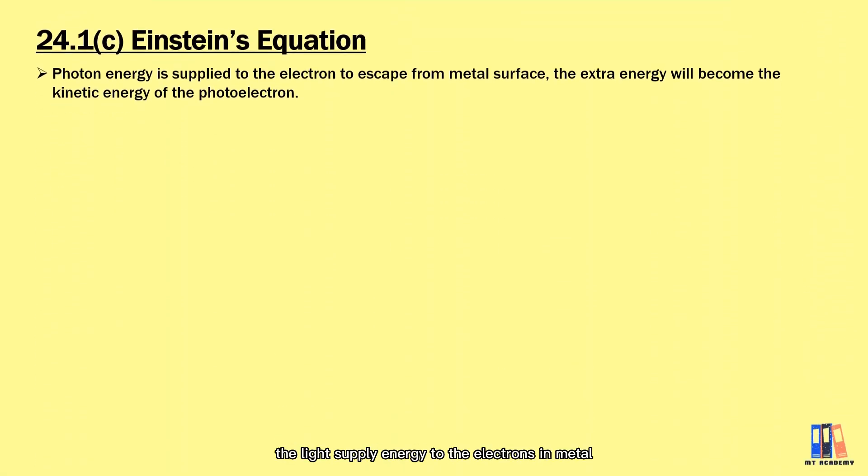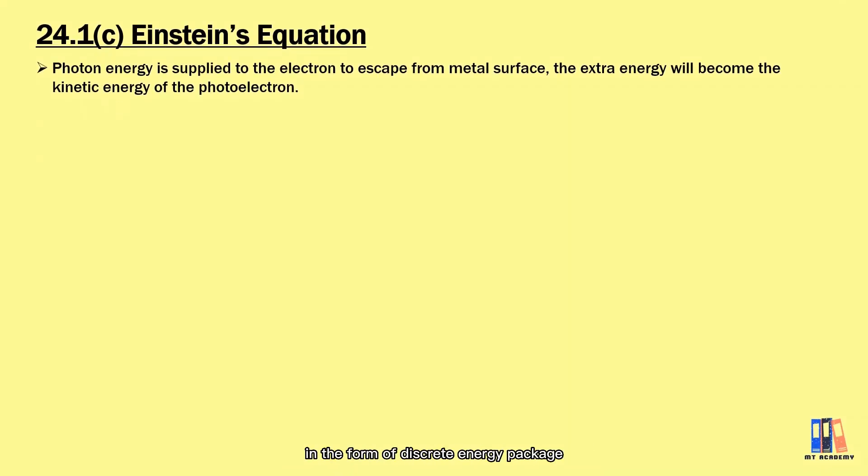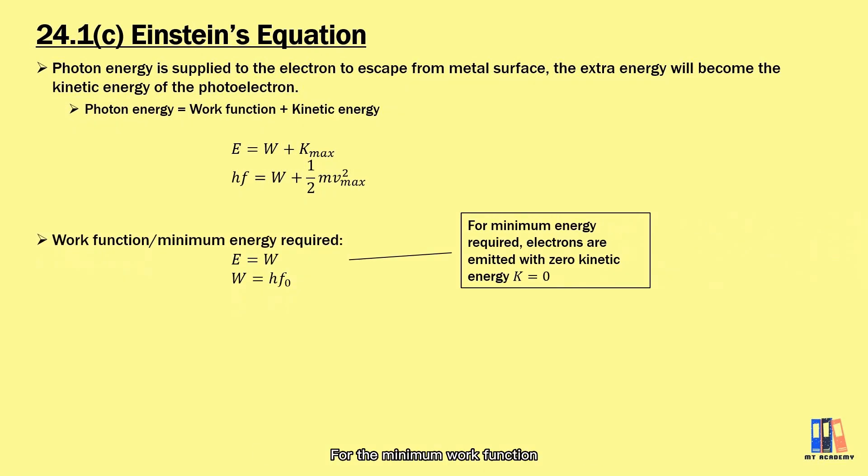So now we know that the light supplies energy to the electron in metal in the form of discrete energy package or also known as photons. The photon energy supplied will be used to overcome the work function then become the kinetic energy of the photoelectron. Hence, we have the equation of the photon energy equal to the work function plus kinetic energy. For the minimal work function, it is when the electron receives energy that is just enough for them to escape but with zero kinetic energy. So from here we can obtain that W is equal to hf0 where f0 is the threshold frequency.